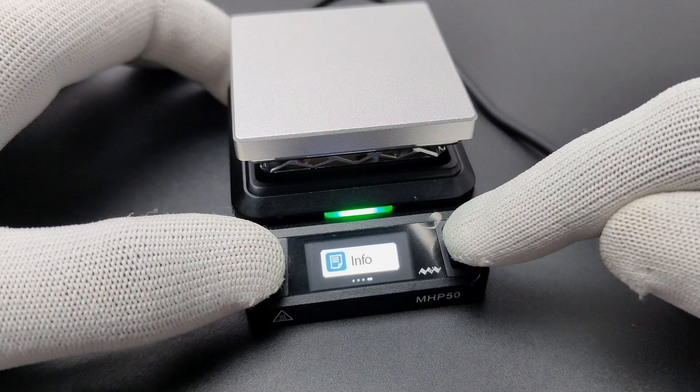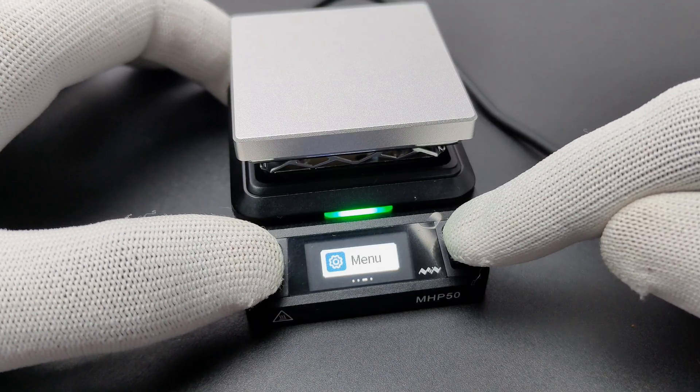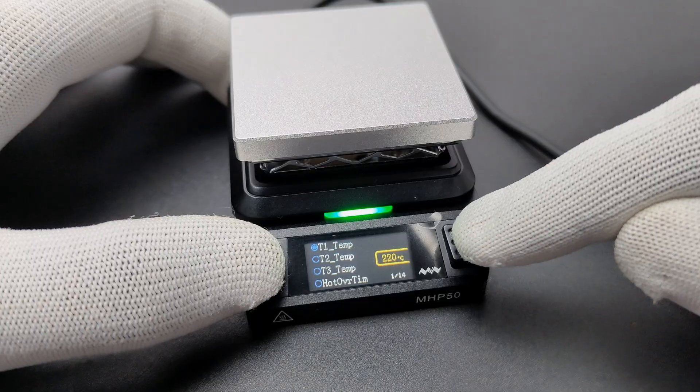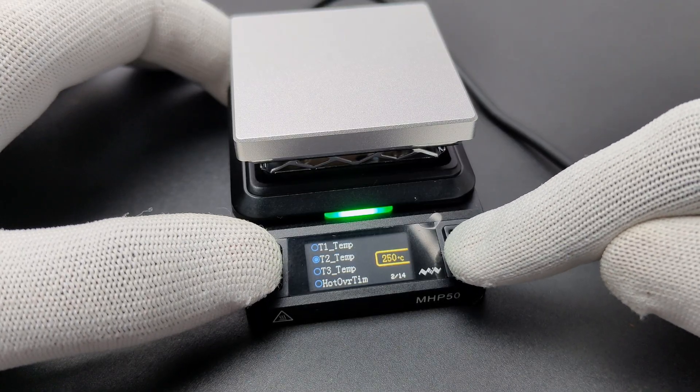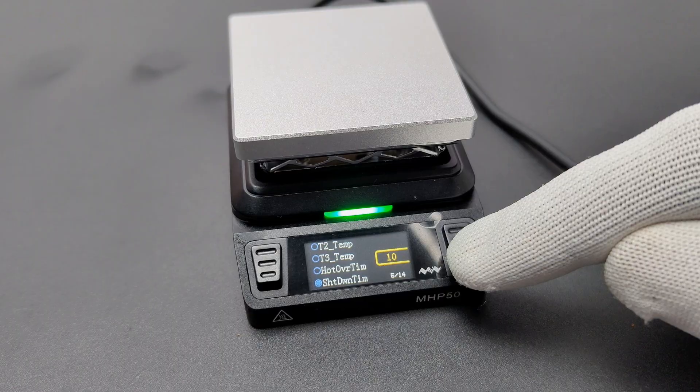Now you can see the details on the LCD. We can navigate the menu by pressing the buttons. Long pressing the left button will allow us to enter the selected parameter. We can set temperature, shutdown time, tilt angle, reflow parameters, etc.